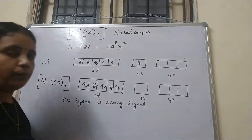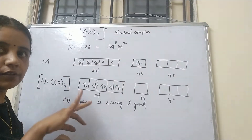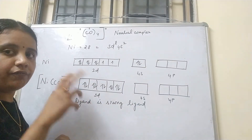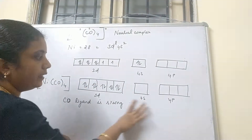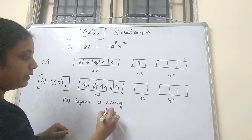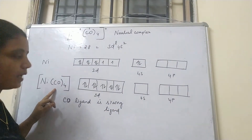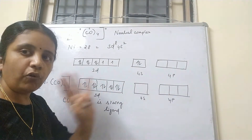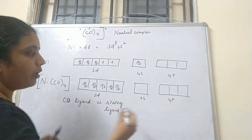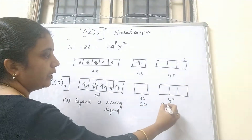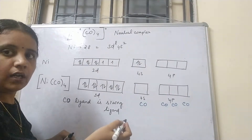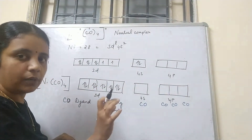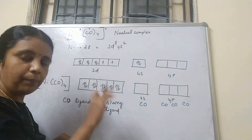Since CO (carbonyl) is a strong field ligand, it causes pairing of electrons. The 4s and 4p orbitals are empty orbitals. These are the vacant orbitals of the central metal ion, and the carbonyl ligand has filled orbitals. There are 4 carbonyl ligands, so we need 4 empty orbitals, which are provided by 4s and the three 4p orbitals.